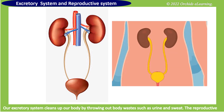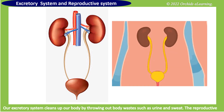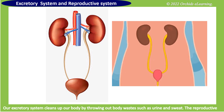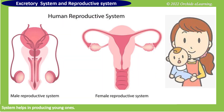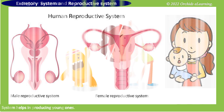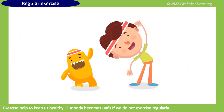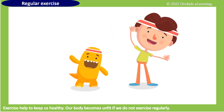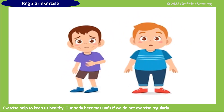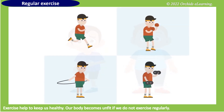Excretory system and reproductive system: our excretory system cleans up our body by throwing out body wastes such as urine and sweat. The reproductive system helps in producing young ones. Exercise helps to keep us healthy. Our body becomes unfit if we do not exercise regularly, so always exercise regularly.